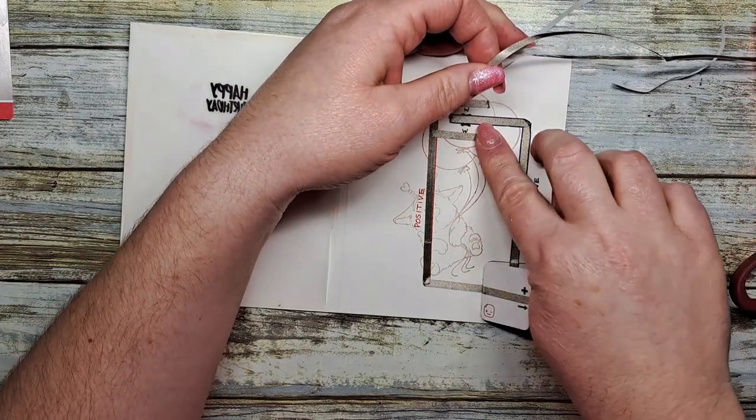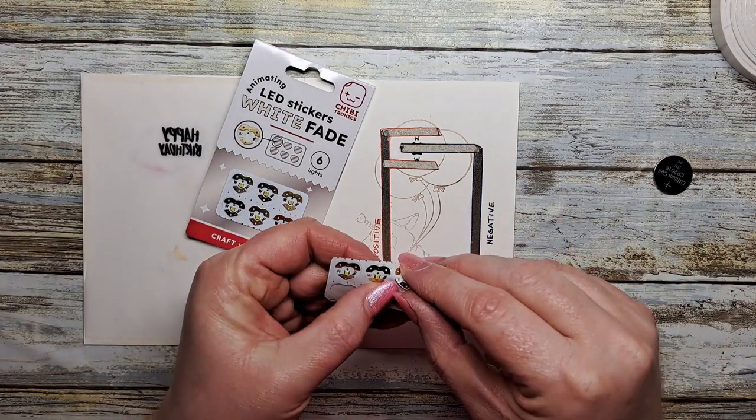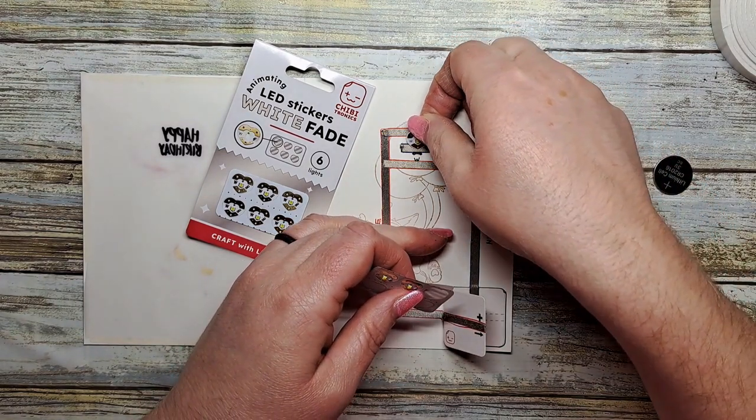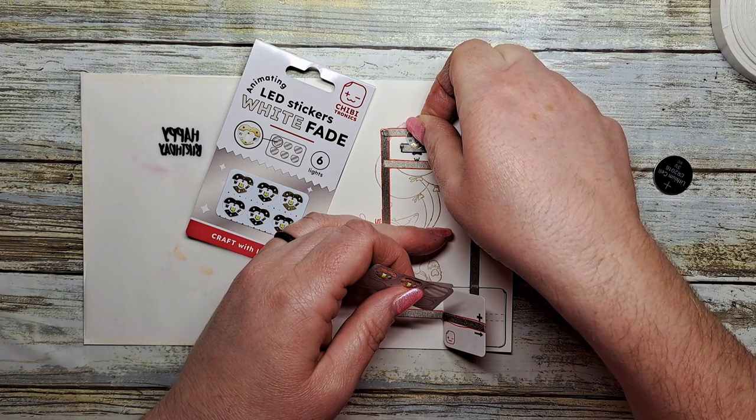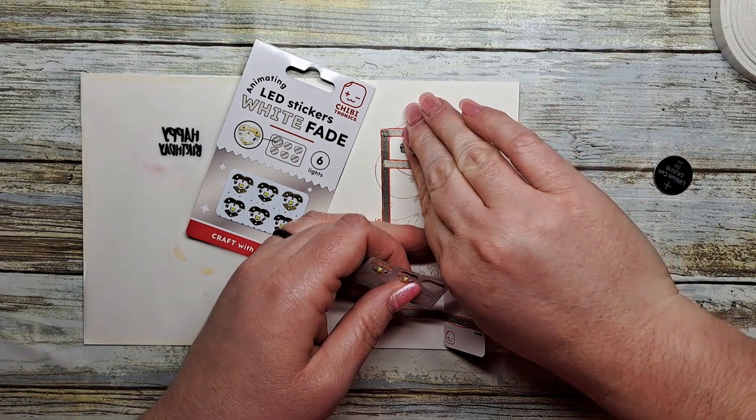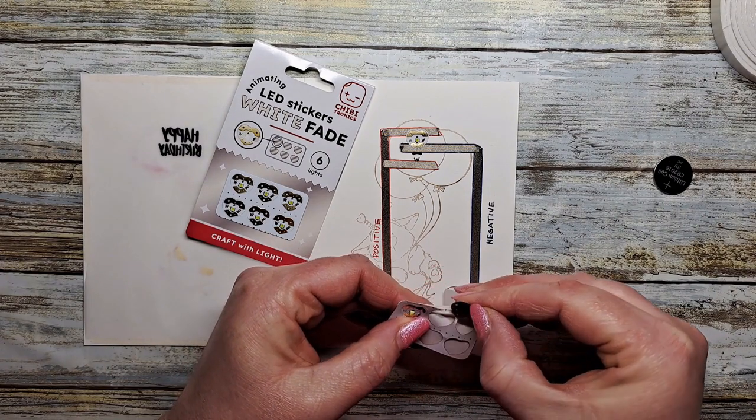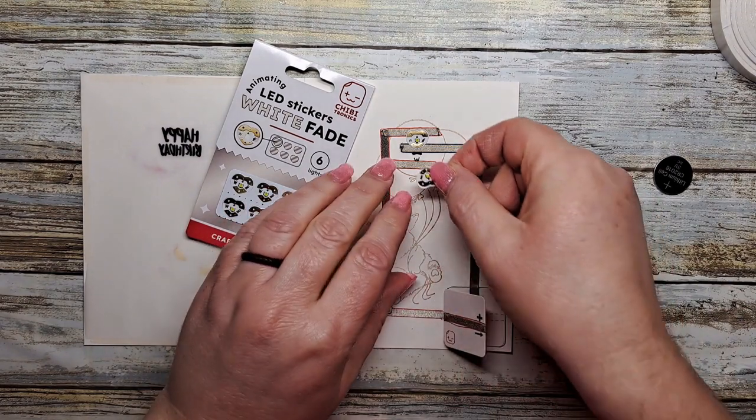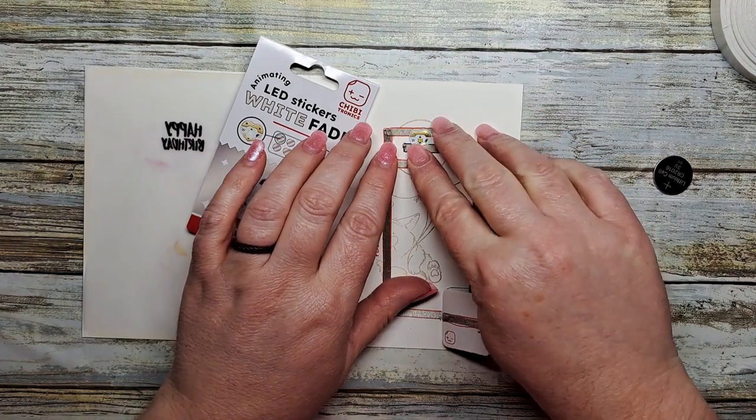Let's add our actual stickers. These ones are animating stickers which means they do some kind of function. In this case it's a white light that fades in and out. They are heart-shaped. Each sticker is clearly labeled with positive and negative side of the sticker and you just match them up to the positive and negative sides of your circuit and voila, your light stickers are all ready to go.